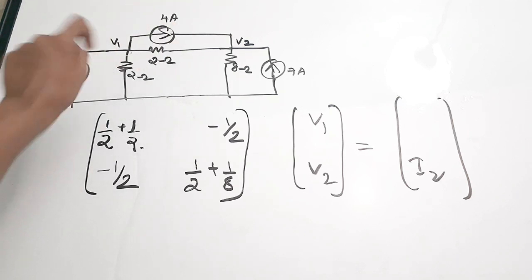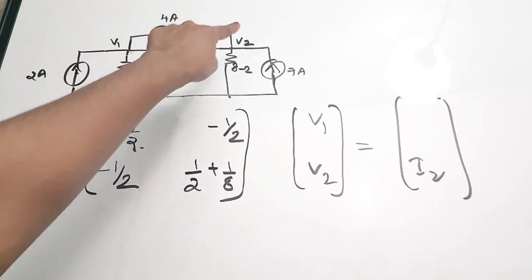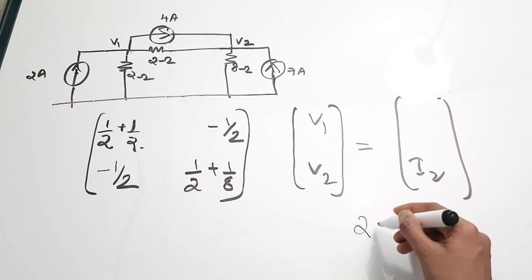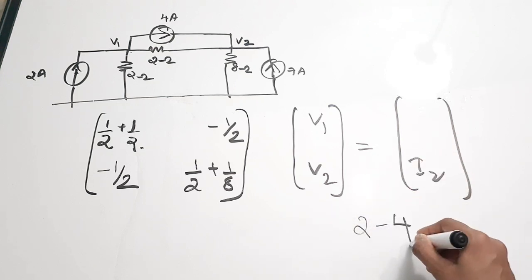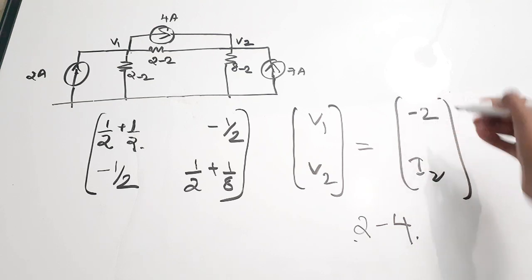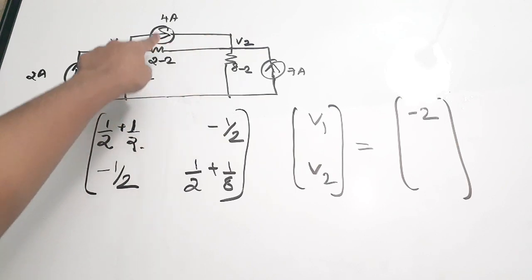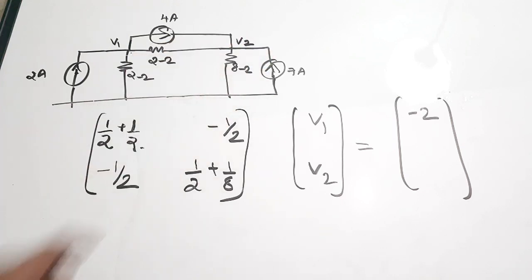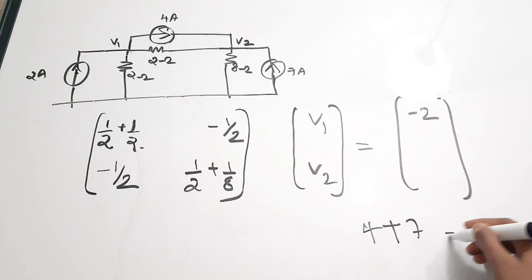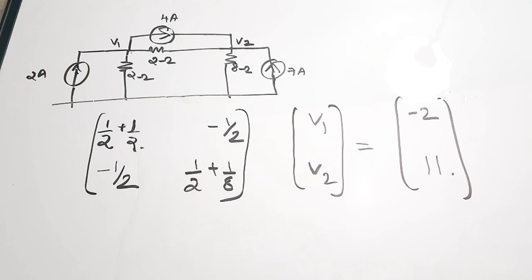For i1, look at the node with voltage v1: 2 ampere is coming in and 4 ampere is leaving, so i1 = 2 − 4 = −2. For i2, look at the v2 node: 4 ampere is coming in and 7 ampere is also coming in, so i2 = 4 + 7 = 11. This completes your matrix form, and solving it gives v1 and v2.